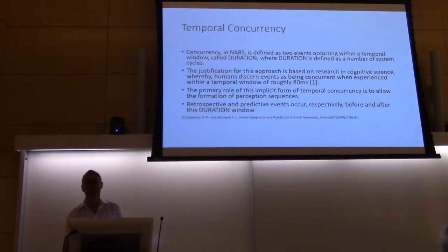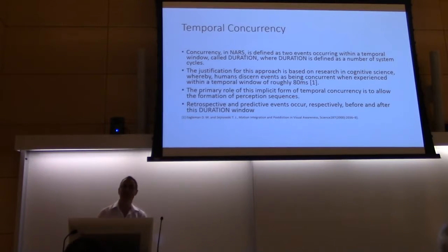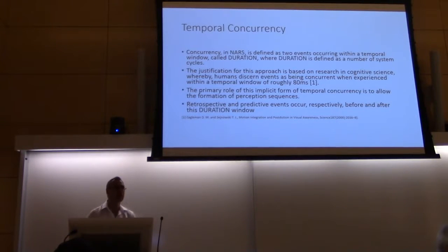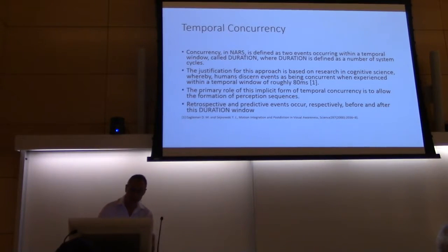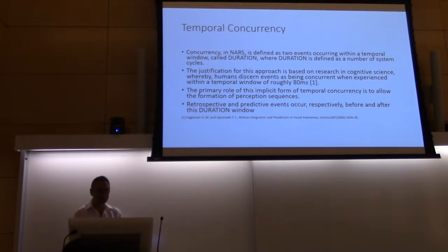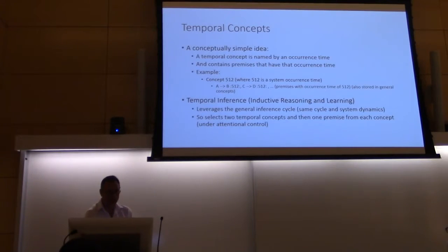We don't use 80 milliseconds, because that's quite a long time in computer terms, but the window can be tailored to a specific application. For example, if you're monitoring chemical interactions, you want a duration window of probably a small number of nanoseconds, whereas if you're monitoring whale migration, you can use a much bigger time window because it's not so critical to be precise. The primary role of temporal concurrency is to allow us to form temporal sequences of co-occurring items.